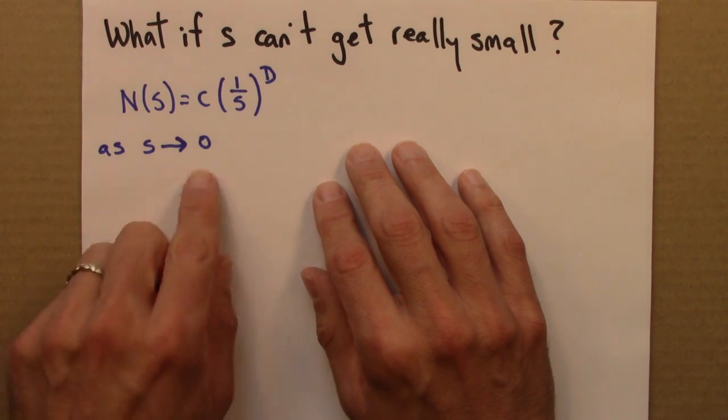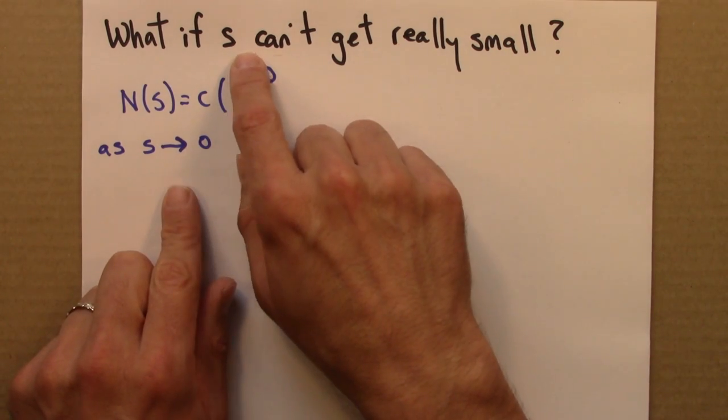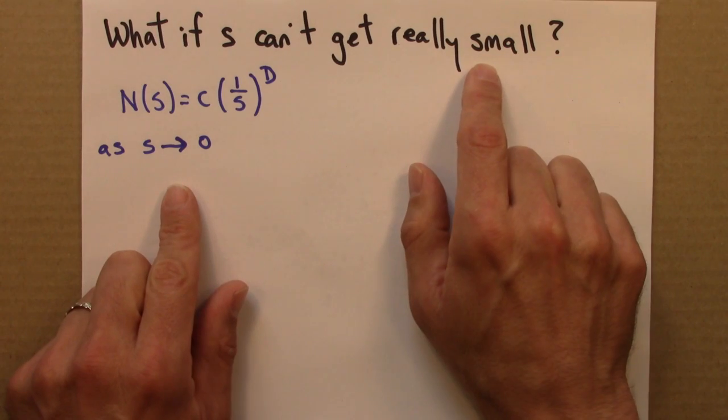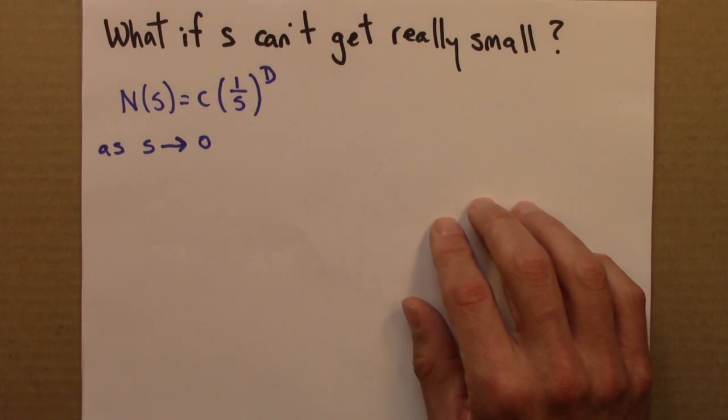There's some problems with this though, which is that S usually can't get really small. And there are a number of ways to see this.